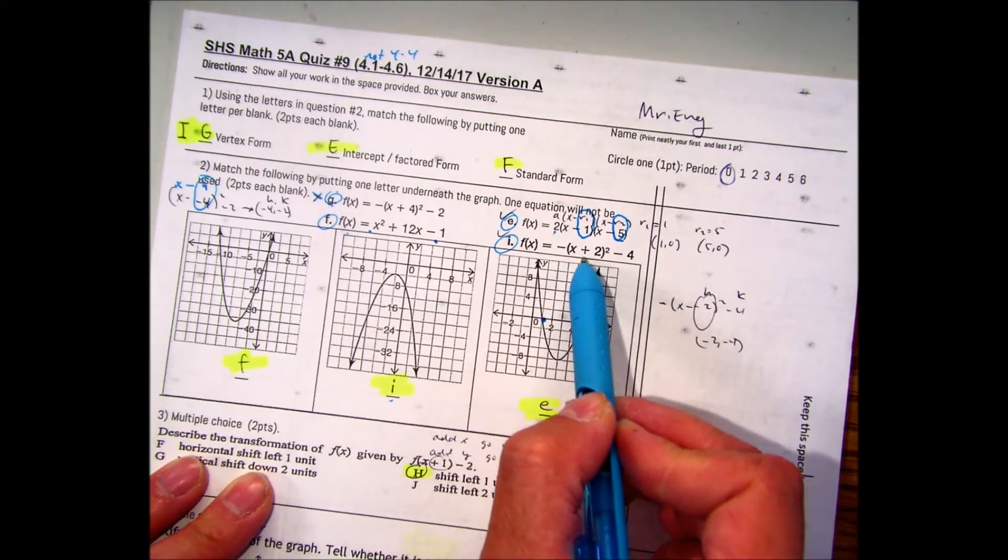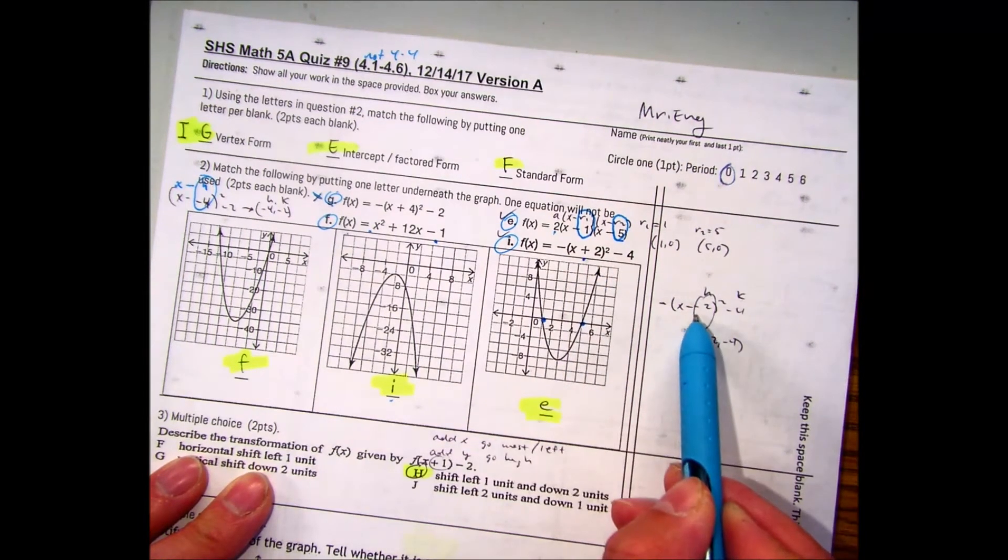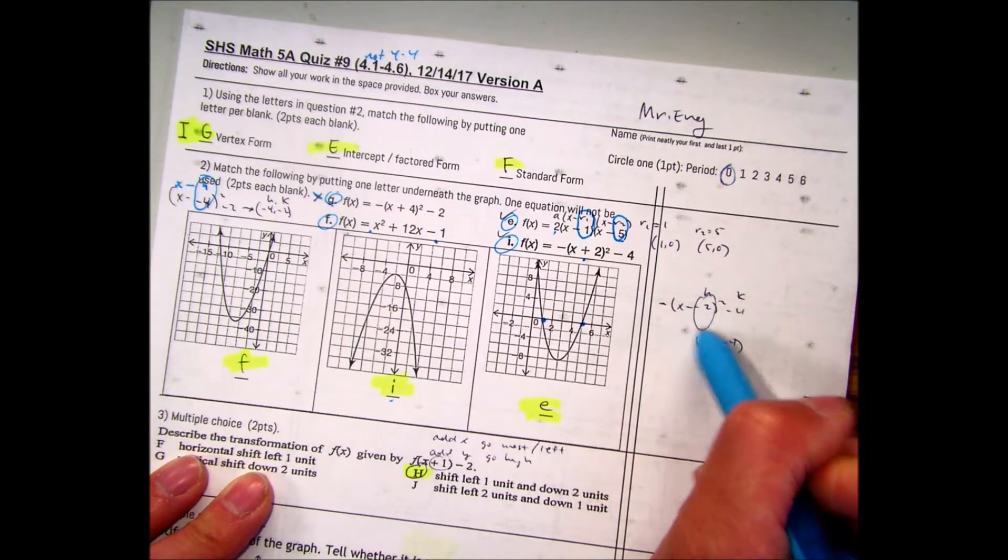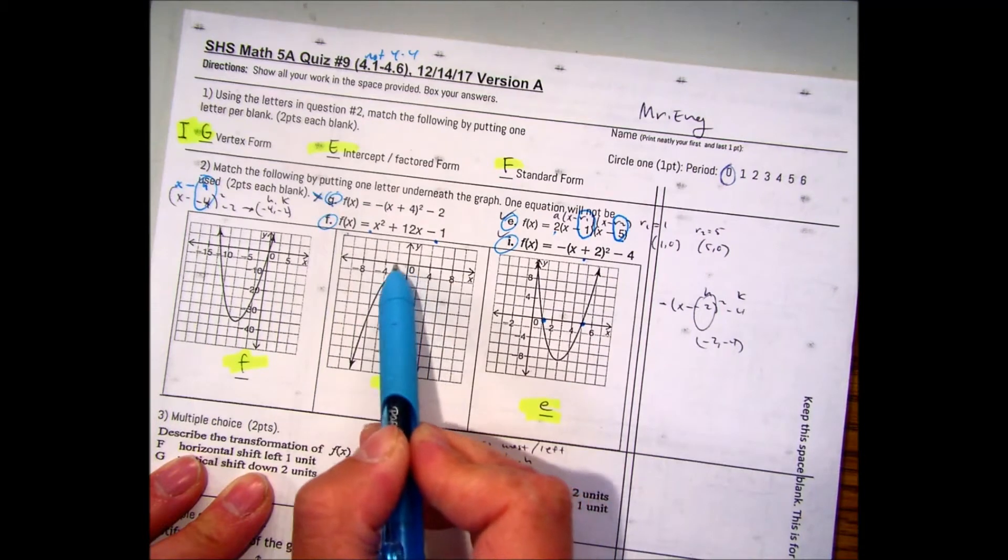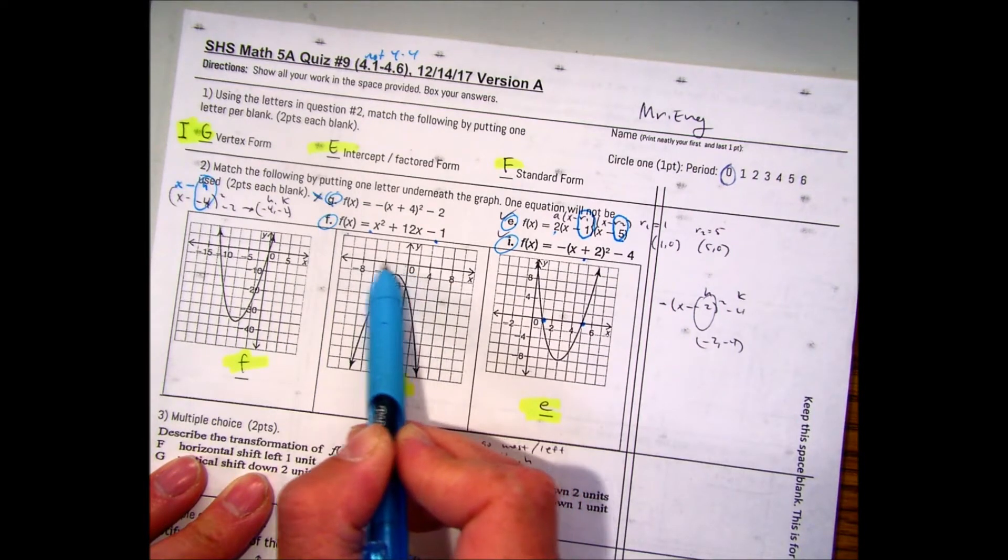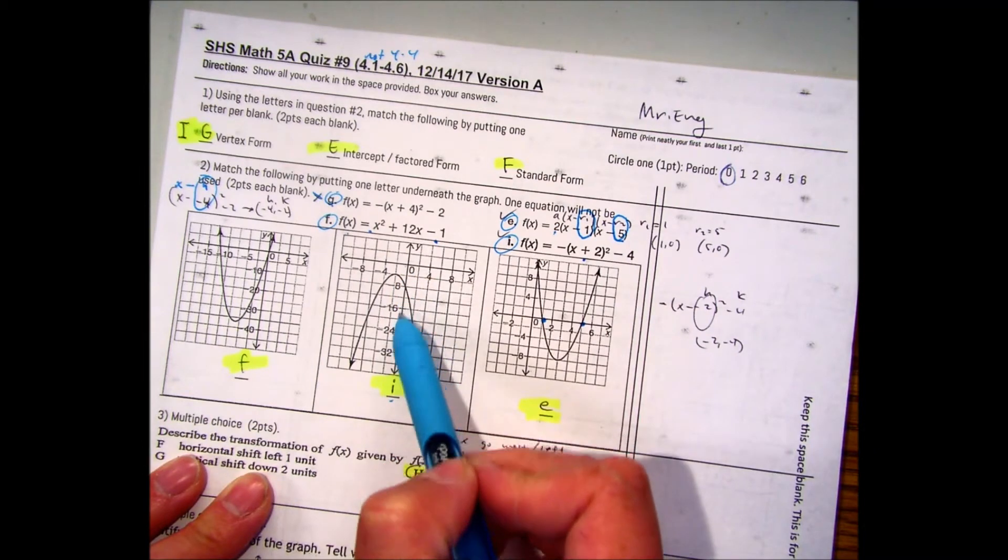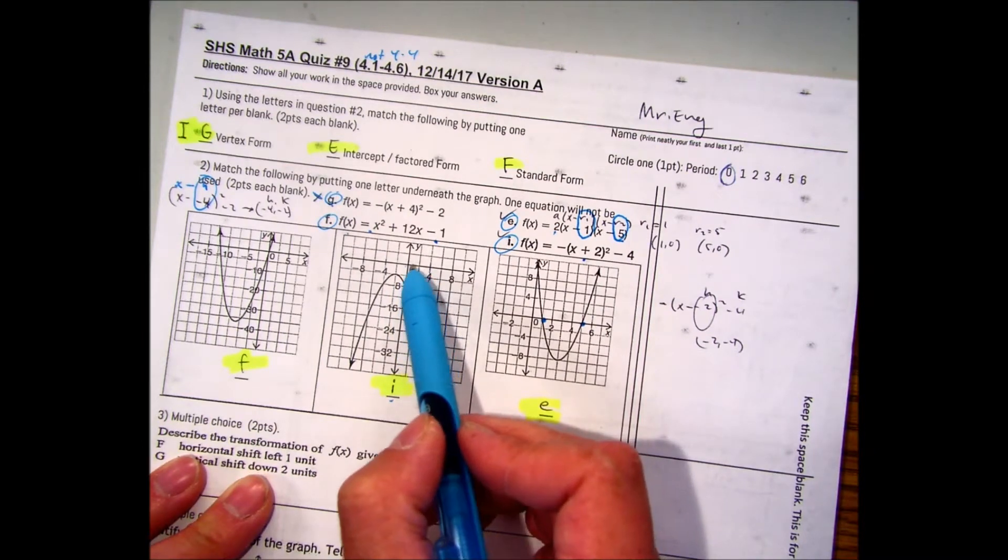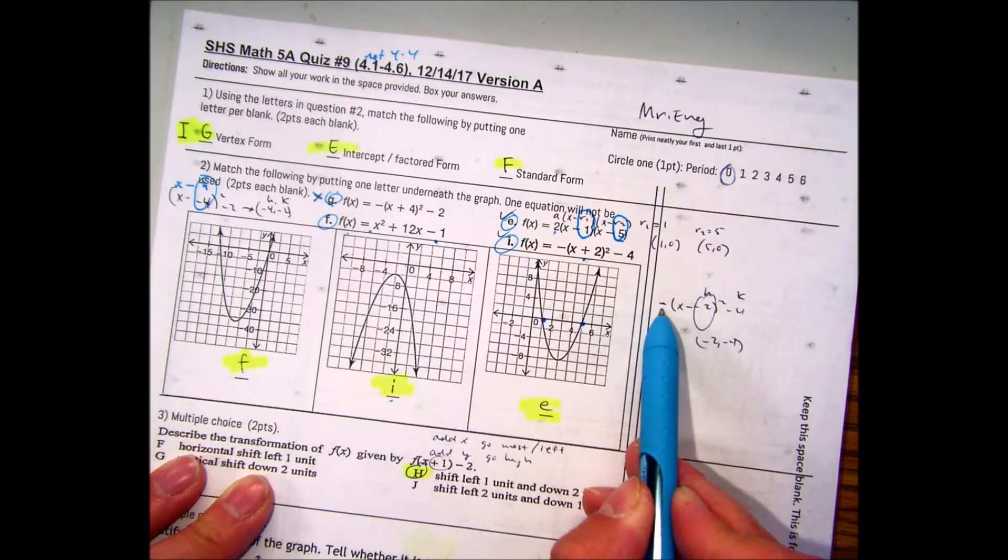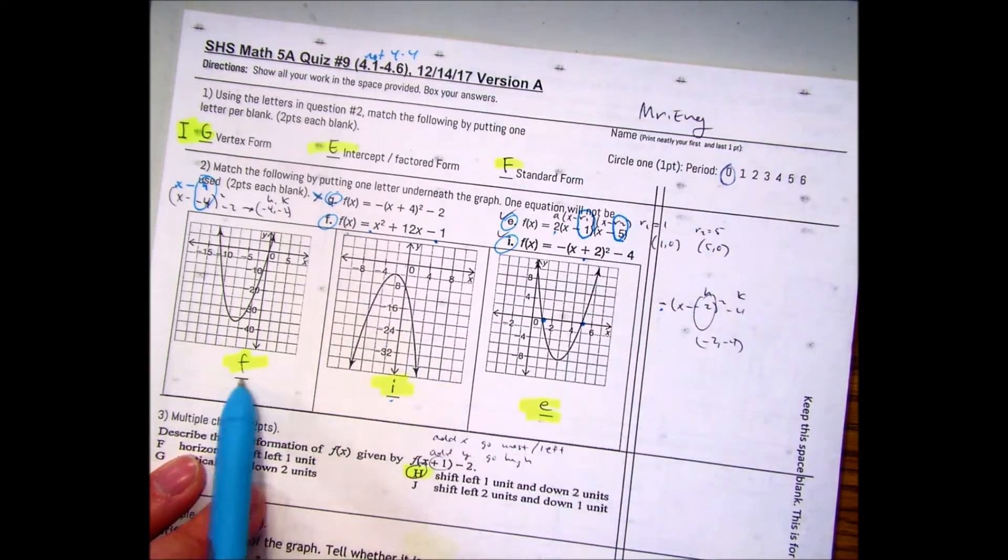This one here, again, I see the plus sign. Just make them two negatives. When I have two negatives there, you'll see that your h value is a negative 2 and your k value is negative 4. So negative 2, negative 4. Notice how this x-axis is counting by 2's, and then the y-axis is actually counting by 4's. So pay attention. And then it's a negative a value, so it's opening down. So it's F, I, and E.